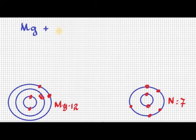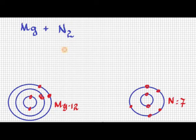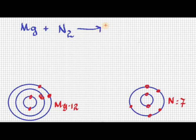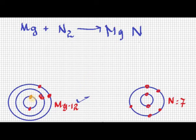Now we look at how magnesium and nitrogen combine to form magnesium nitride. Magnesium is Mg. Nitrogen is unstable on its own, so it forms a covalent bond — that's why we write N₂. N₂ stands for nitrogen gas; similarly, hydrogen gas is H₂ and oxygen is O₂. So magnesium reacts with N₂. Now, magnesium's atomic number is 12 — two electrons in the first orbit, eight in the second, and two in the outermost orbit.